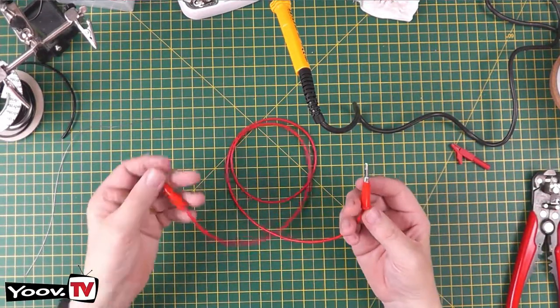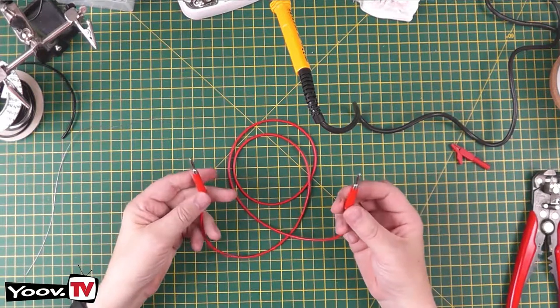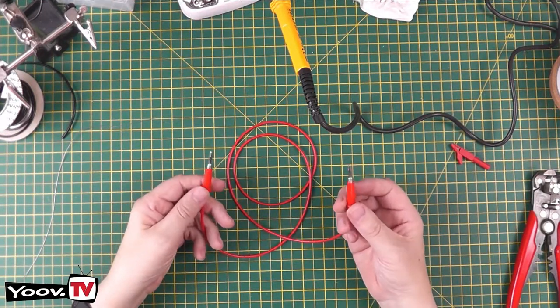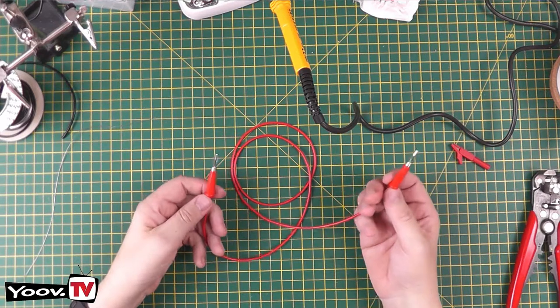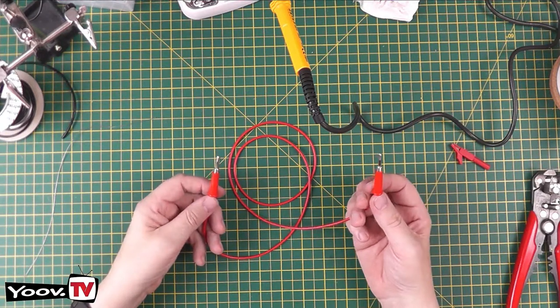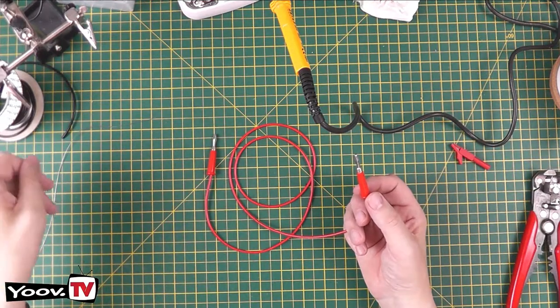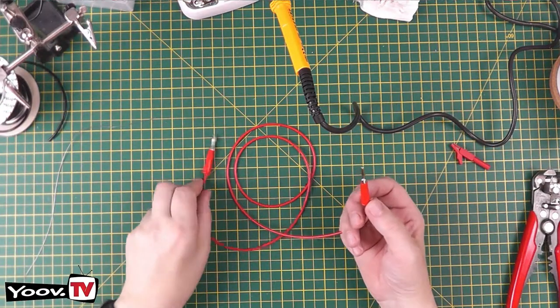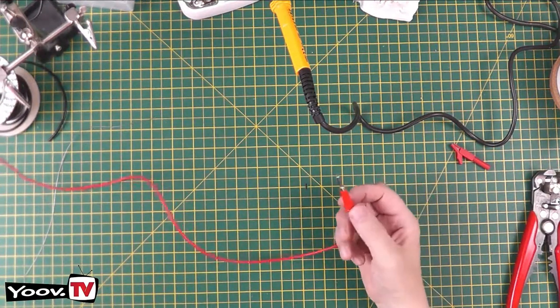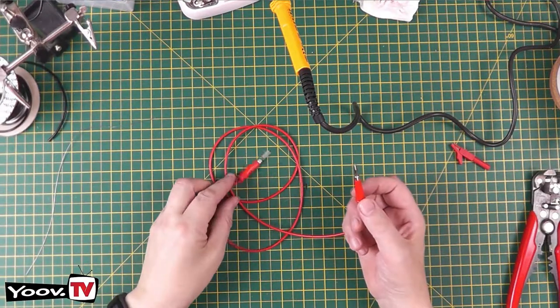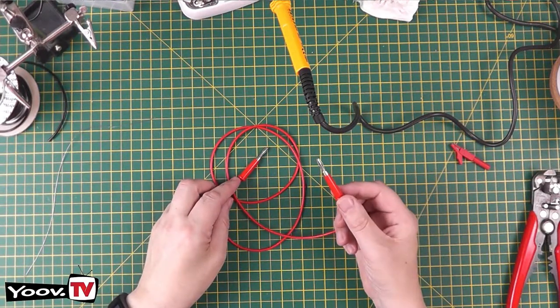These sort of cables come in a standard length generally about a meter but the advantage of making your own is that you can make them whatever length you want. My power supply is quite close to my bench so having a long meter cable just gets in the way so I prefer to have shorter cables for my bench power supply.